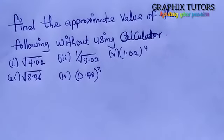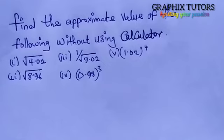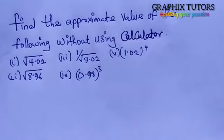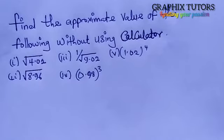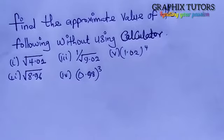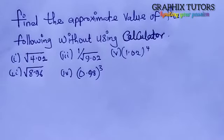Good everyone, my name is Graphics. Today we want to analyze this problem in mathematics where we are told to find the approximate value of the following without using a calculator: (1) square root of 4.02, (2) square root of 8.96, (3) 1 divided by square root of 9.02, (4) 0.98 to the power of 3, and (5) 1.02 to the power of 4. We will use binomial expansion to analyze this.